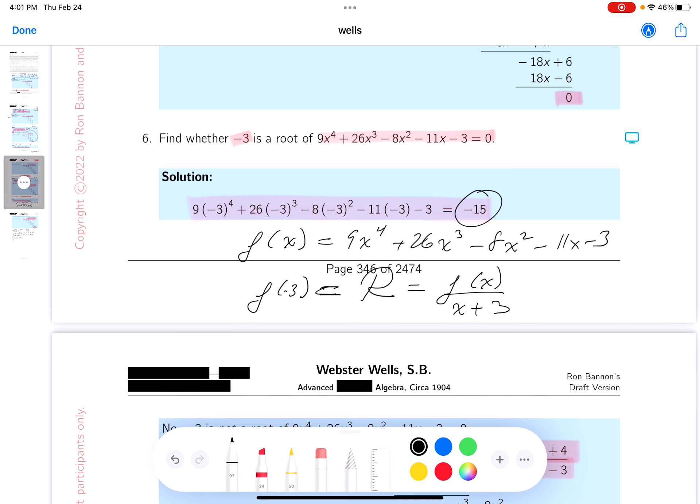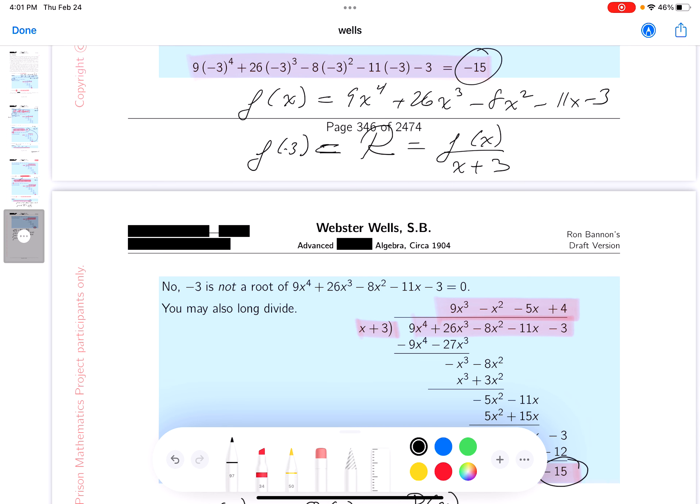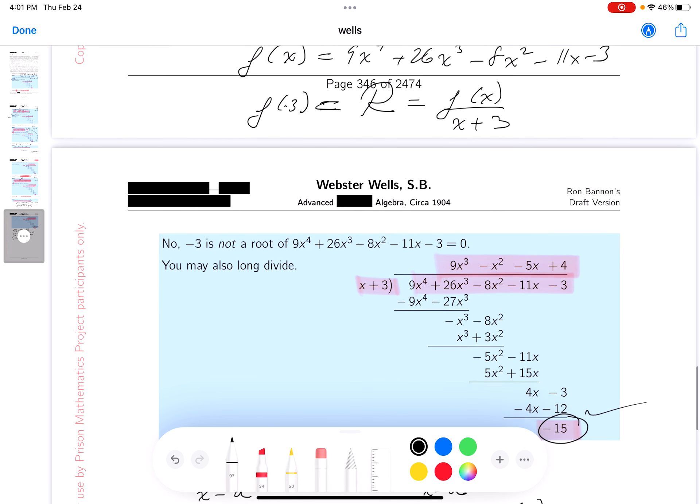f(-3) is the remainder, that's all it is. That's an important fact, by the way. Yeah, we got it, thank you.